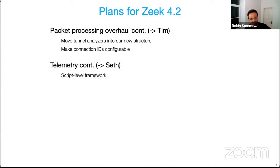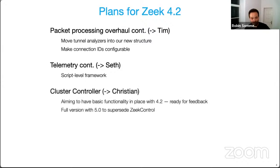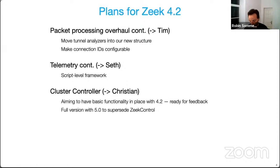In 4.1, we added support for telemetry collection and exporting into Prometheus. It's currently a low-level interface, and going forward we're hoping to add the script-level side to that so people can more easily use it. Seth will be talking about this briefly in one of our lightning talks today. The packet processing pipeline overhaul is something Tim is going to talk about. Cluster control is something that Christian started working on a while ago, and for 4.2 we hope to have a version ready for people to try out. It's essentially something to eventually replace ZeekControl as the new management framework for Zeek installations, particularly for Zeek clusters. Zeek control is just showing its age at this point.